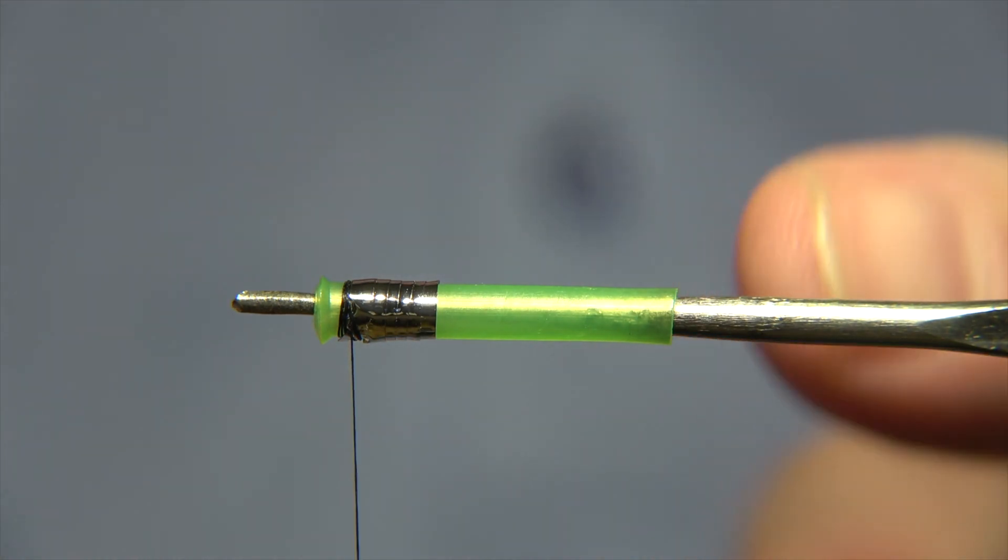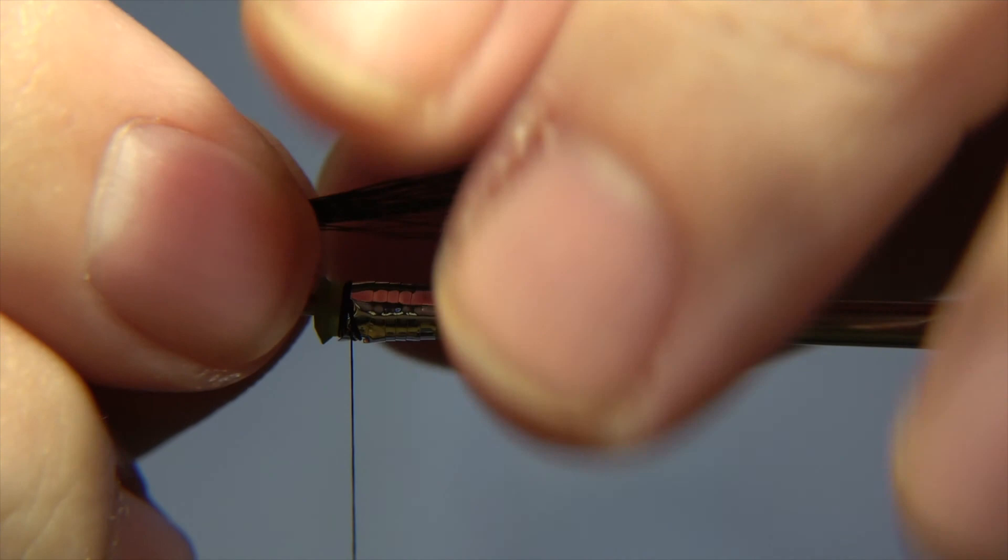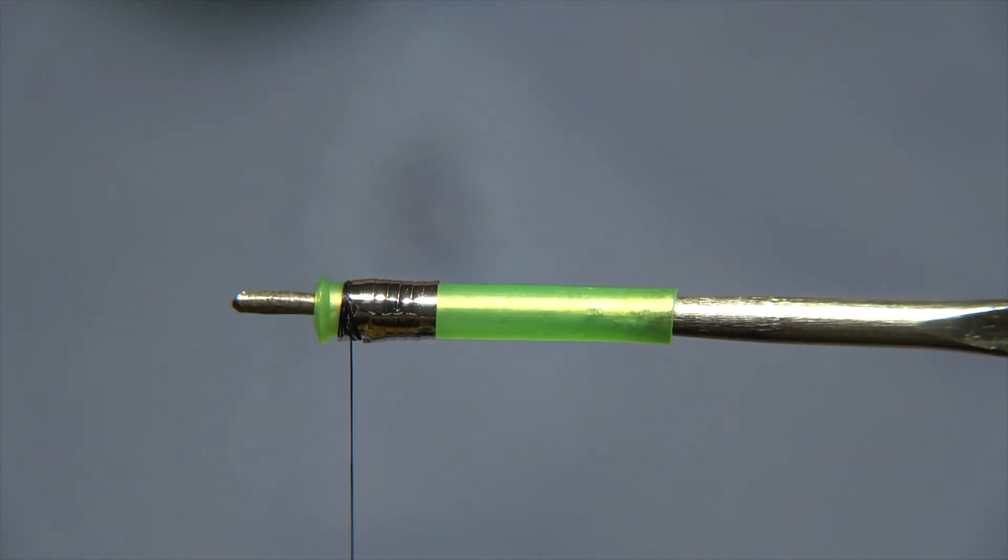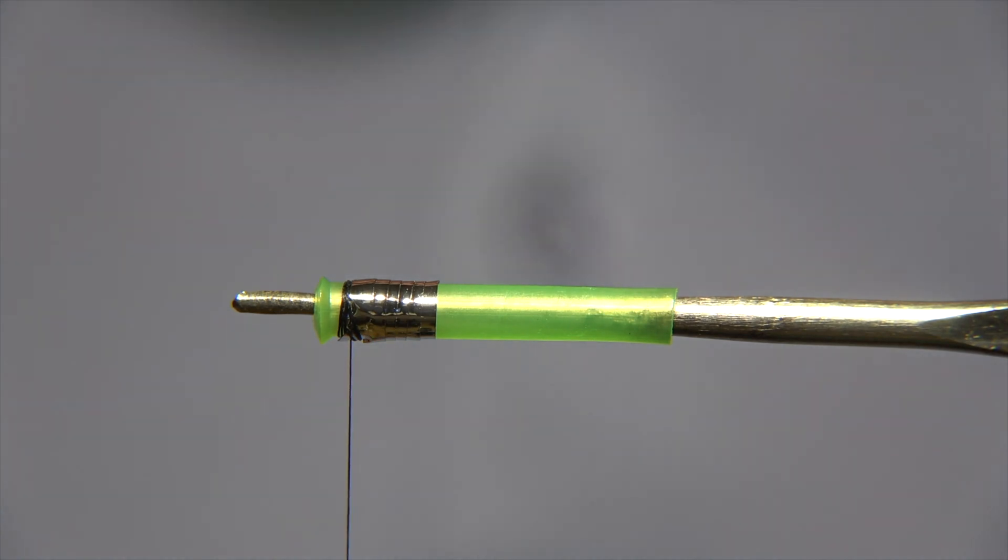The wing of the fly is a black squirrel and the wing goes slightly longer than the length of the tube itself.